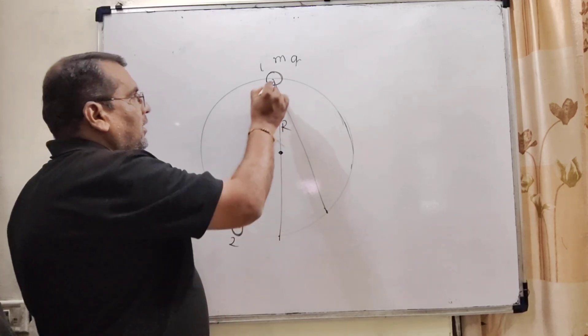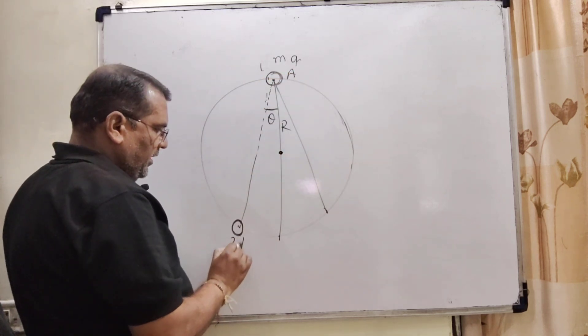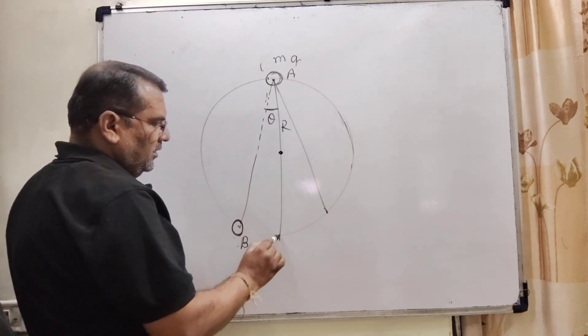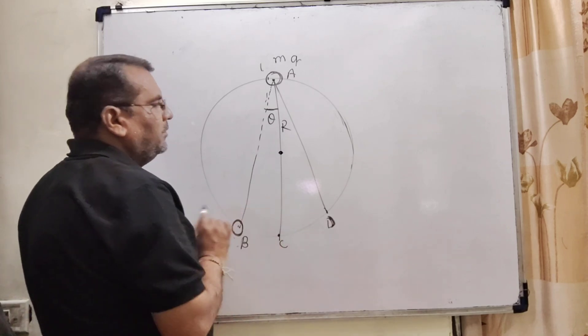And this is the center of this hoop, and the radius is already given, that is R. The points are named A, B, C, D.